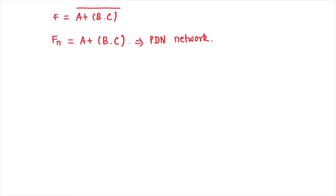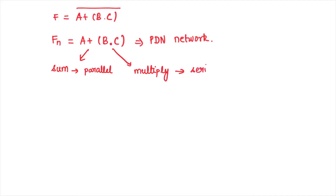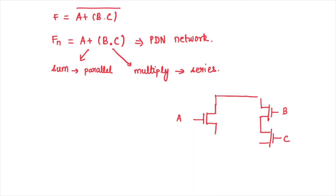For implementing the pull-down logic, we have two rules: a '+' (sum) denotes a parallel connection of transistors, and a '·' (multiplication) denotes a series connection of transistors. All transistors used are NMOS transistors. So we have transistor 'a', and b·c means transistors b and c will be connected in series. Since we have a + b·c, the 'a' path and the 'b·c' series combination are connected in parallel.